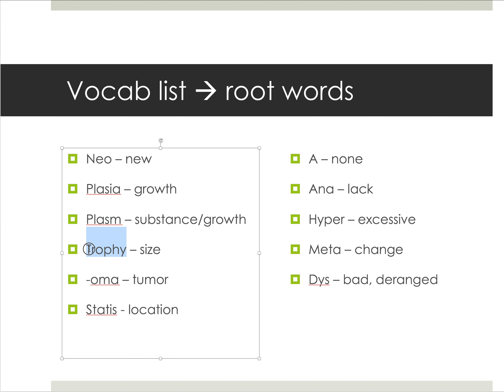'Trophy' comes from the word 'trophic.' When something is hypertrophic, it means it is increasing in size. So 'trophy' refers to size, and it's also associated with a general increase in function, which is an important concept.